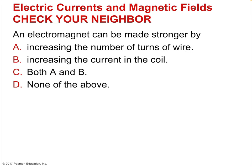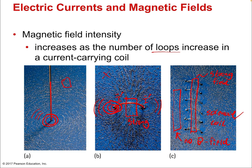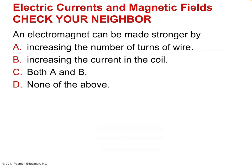An electromagnet can be made stronger by increasing the number of turns of wire, increasing the current, or both. The answer is both — greater current means stronger field, as does a greater number of loops.